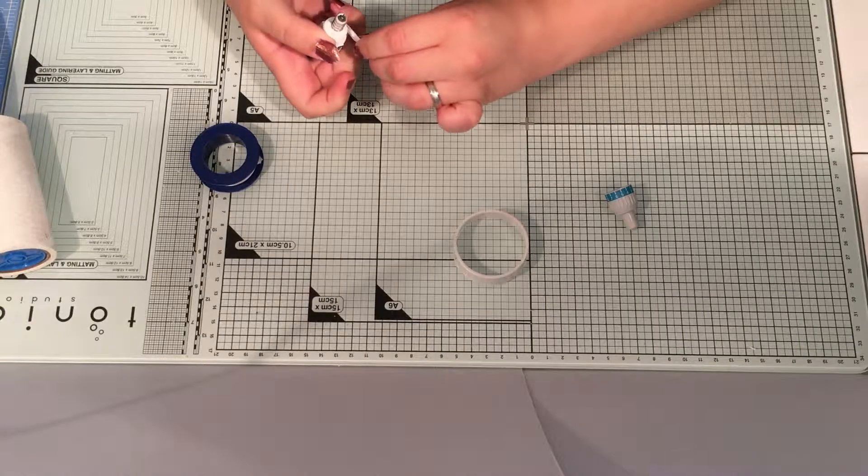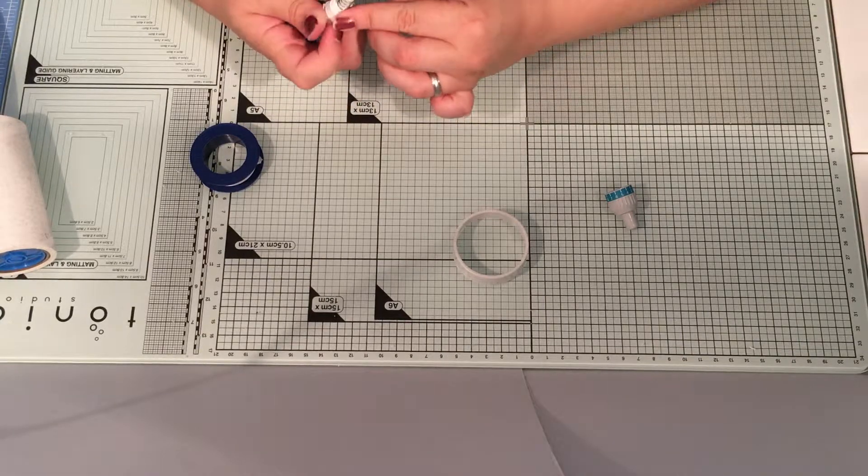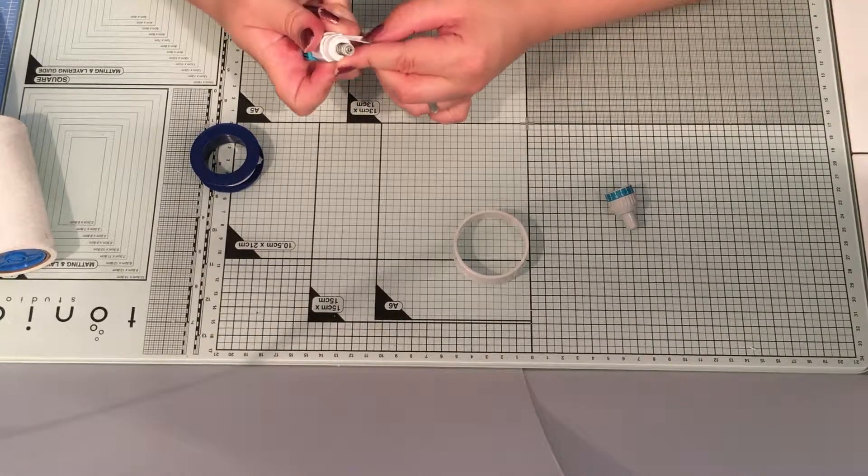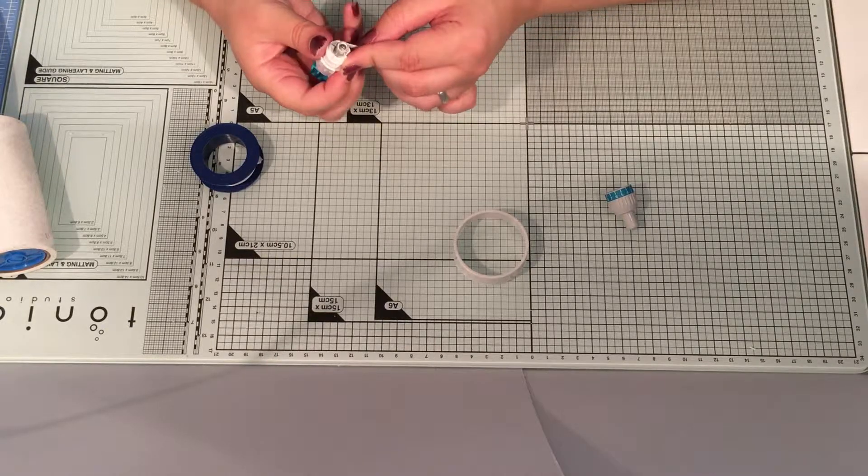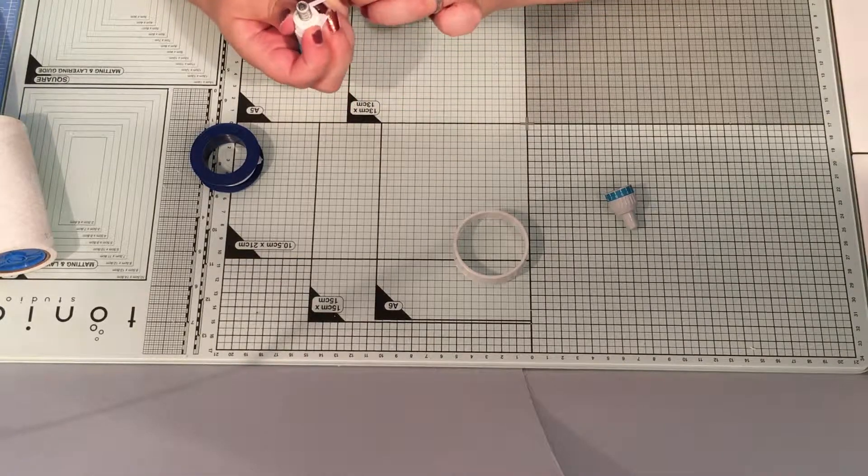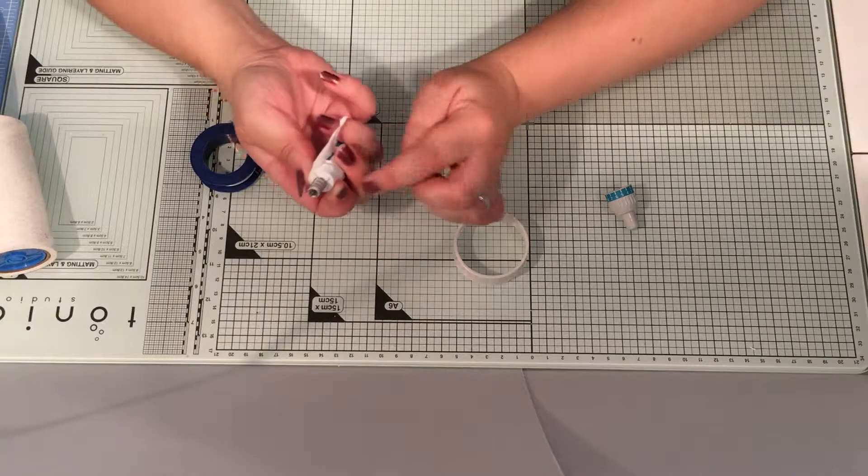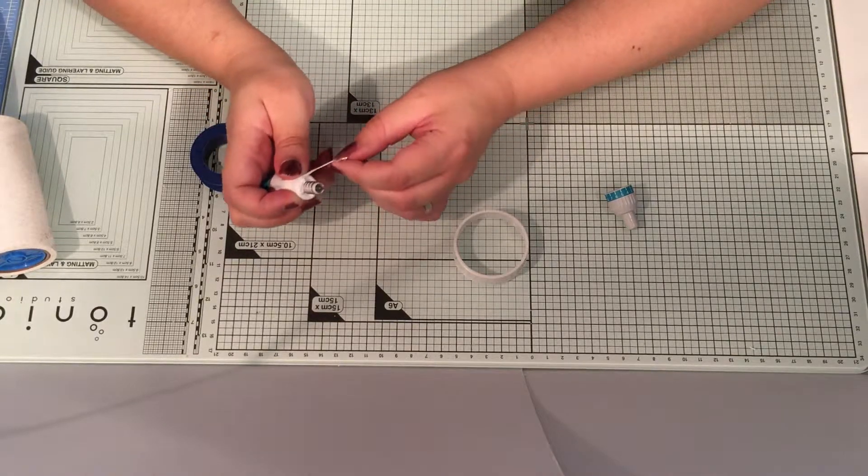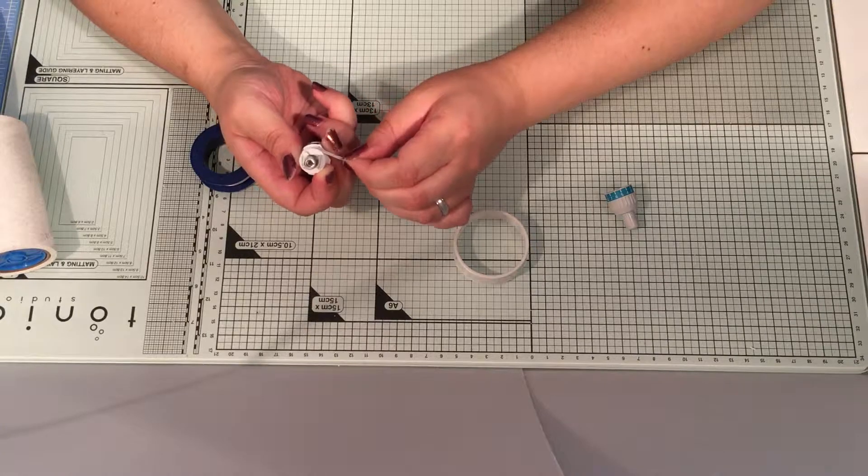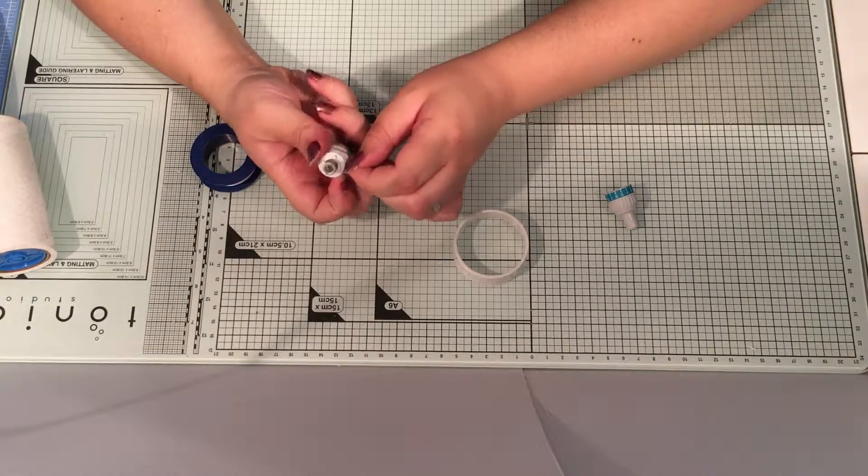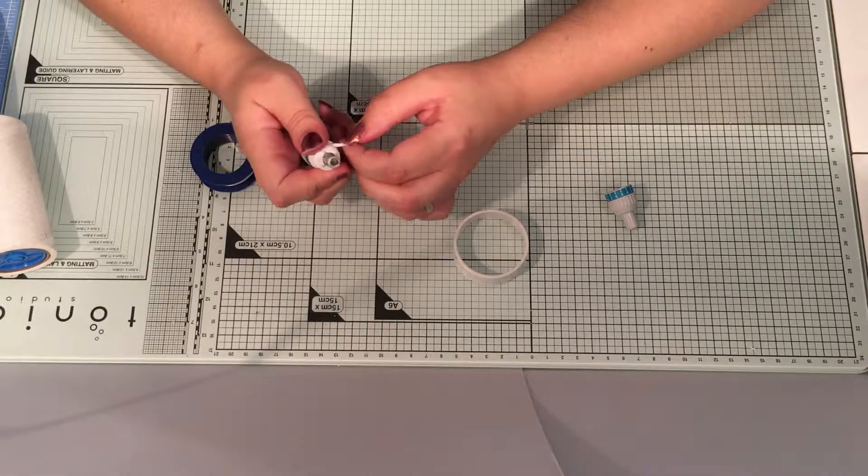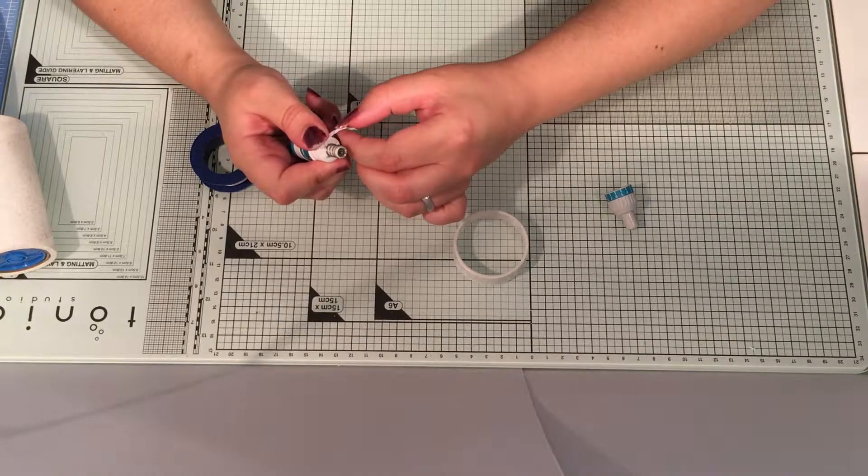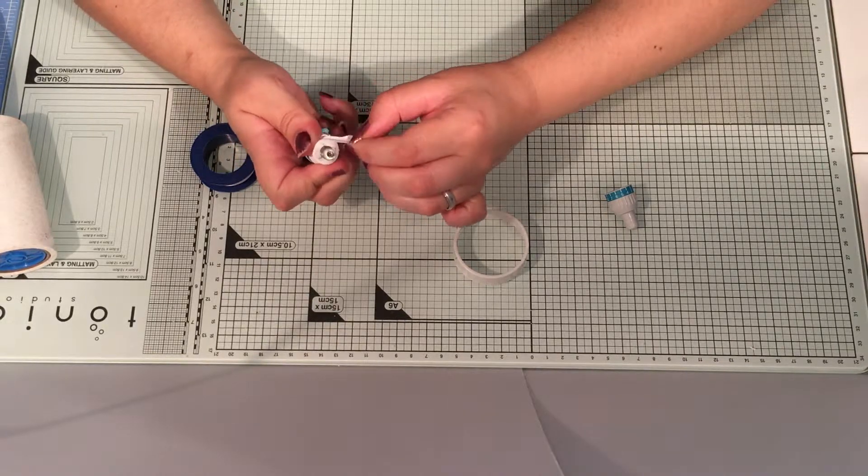Don't worry if it pings off a few times. When you get back round to meeting it, that is when it really starts to stick to your blade. So you can see it's just about to come back to meet. There we go. Wrap it round and you're just going to flatten that section out a bit more.